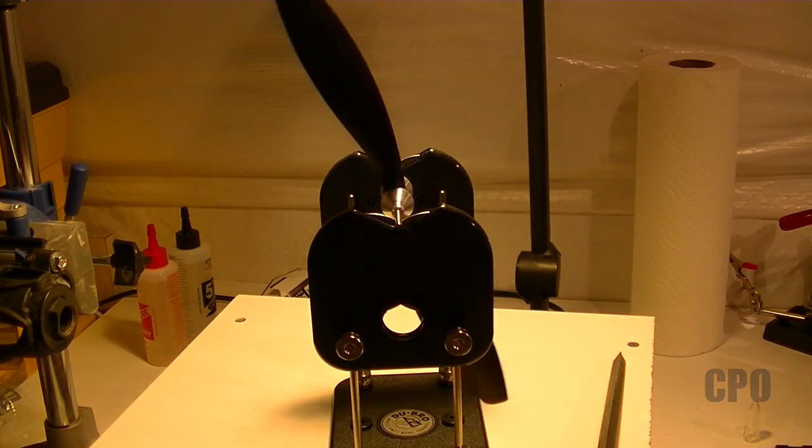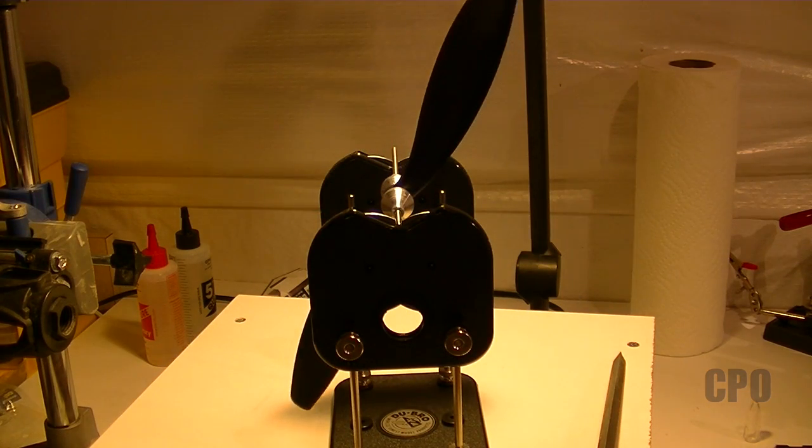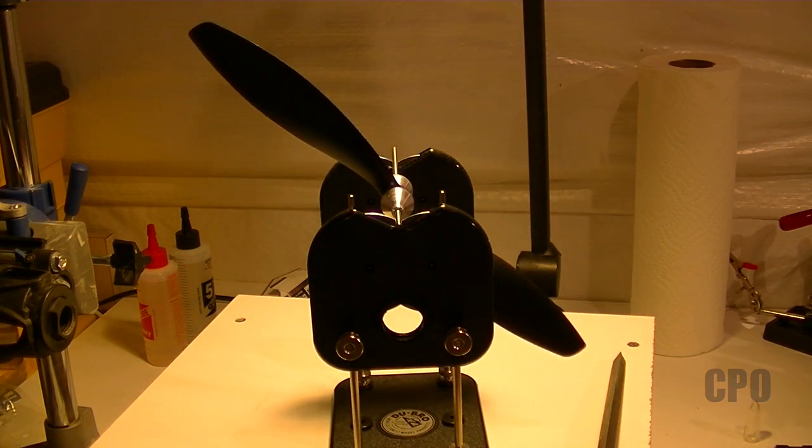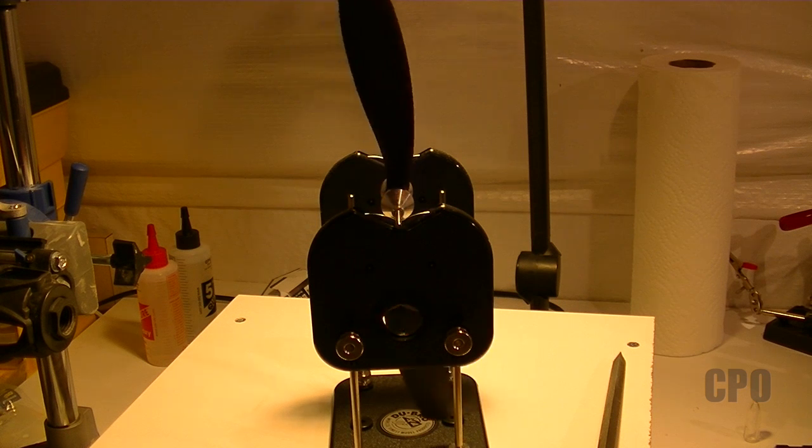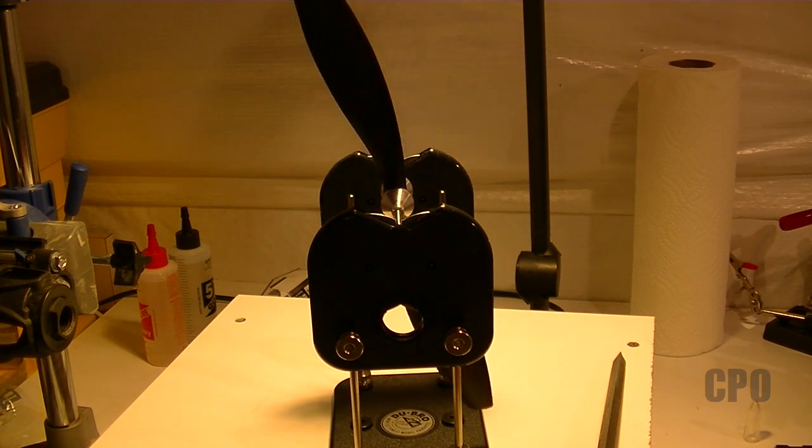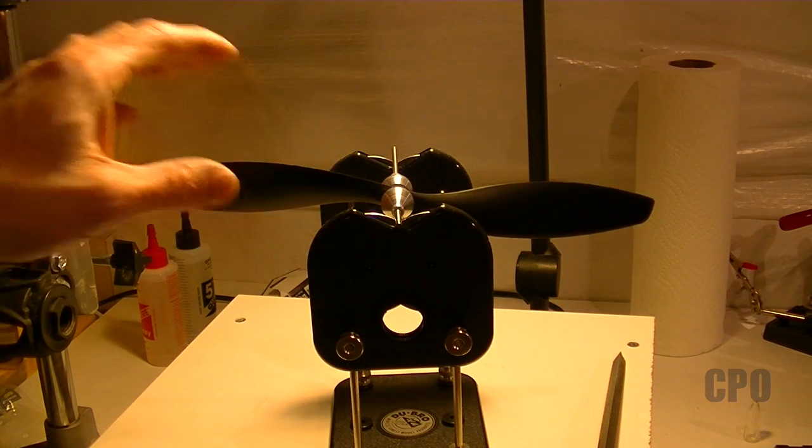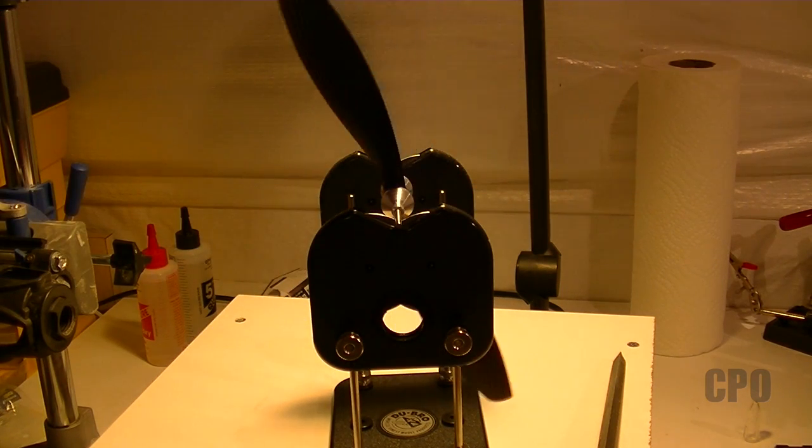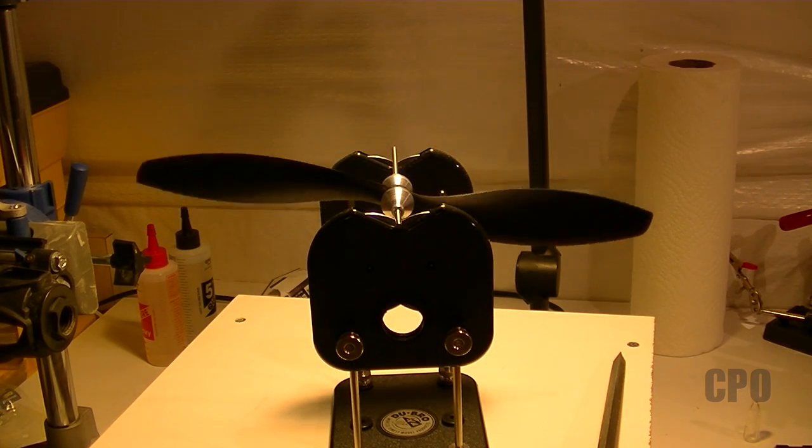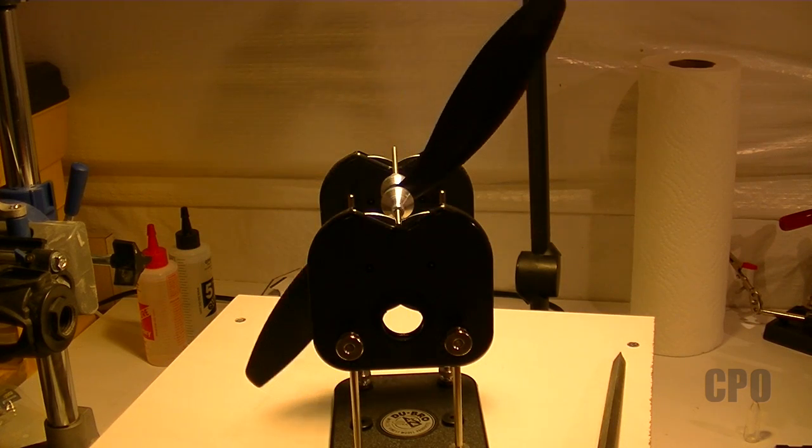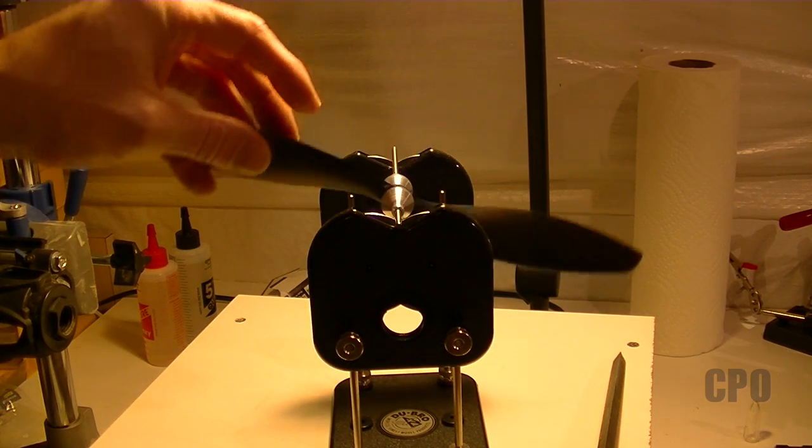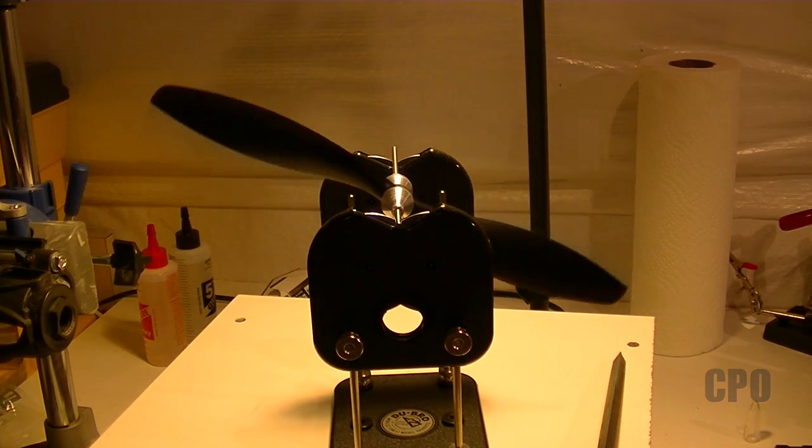All right, so let's take a look at prop number two. Now with this one, you can see the one blade almost hangs straight down. It's kind of like a ticking clock. And that's immediately indicative of a heavy blade. And it seems that the heavy blade is outweighing any of the imbalance in the hub at this point.